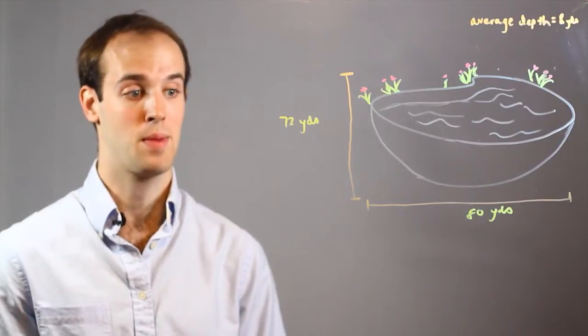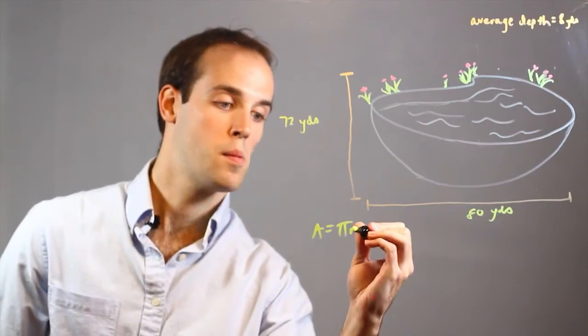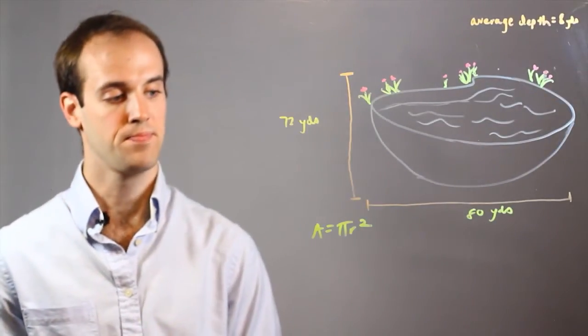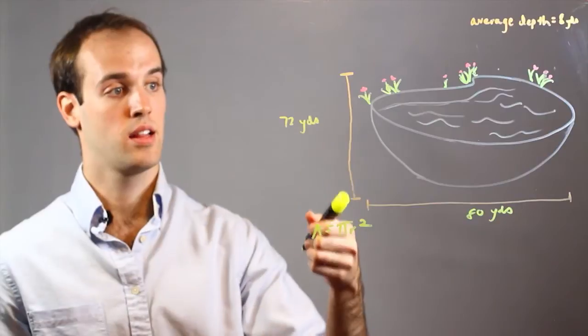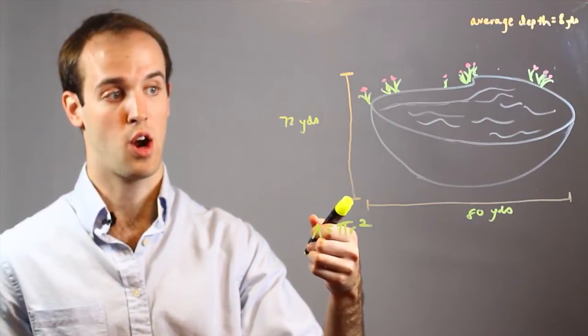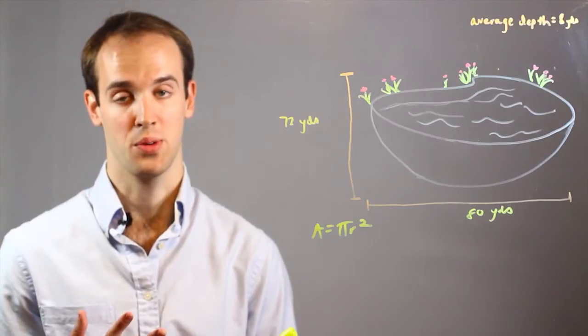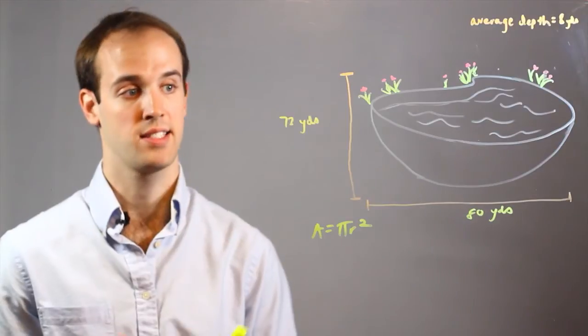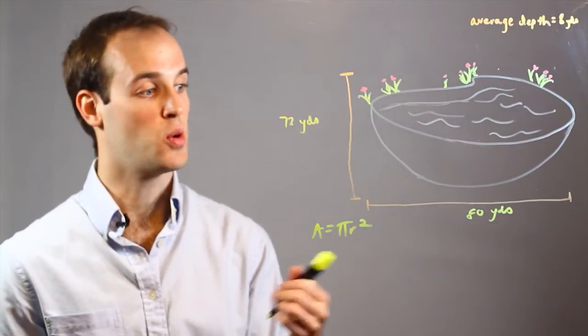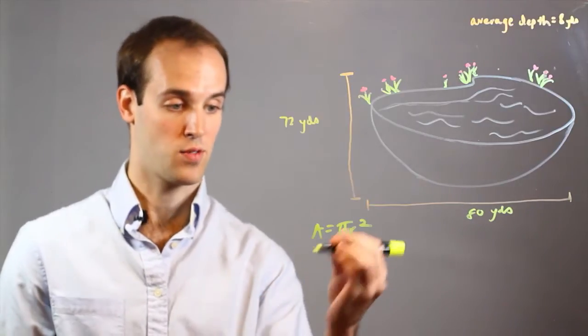I can approximate the area by using the formula A = πr². For the radius, I know that the pond is 72 yards lengthwise and 80 yards widthwise. I would average the two together to get an approximate radius. The average between 72 and 80 is 76, so I'm going to plug in 76 for r.